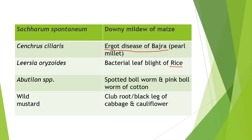Next, Abutilon species — alternate host is spotted bollworm and pink bollworm of cotton. And last is wild mustard, whose alternate host is club root or black leg of cabbage and cauliflower.